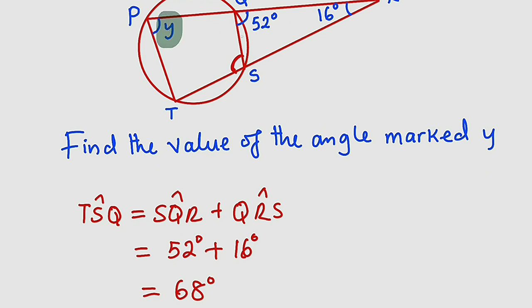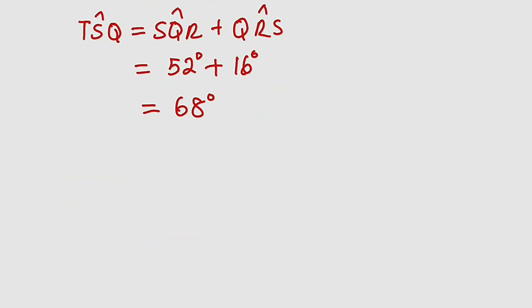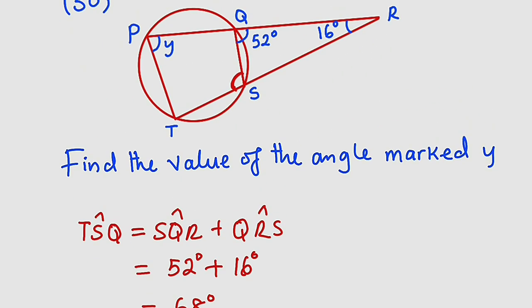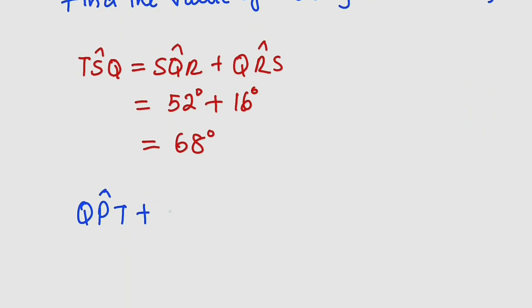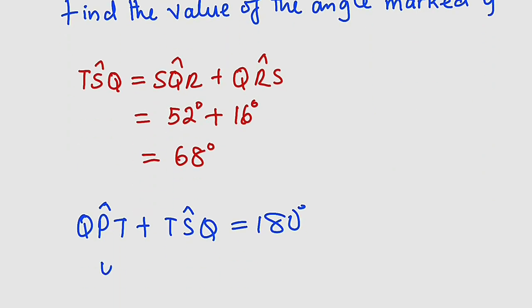So y plus this particular angle will give us 180. So angle QPT plus TSQ is equal to 180 degrees, and this is y which we are looking for.